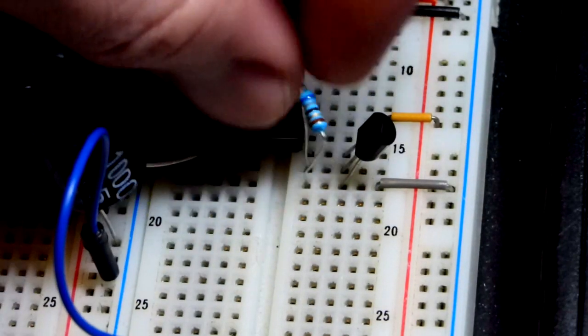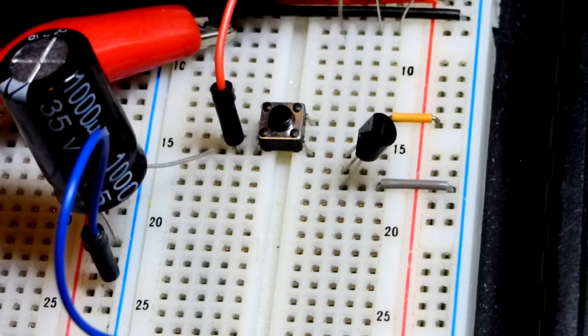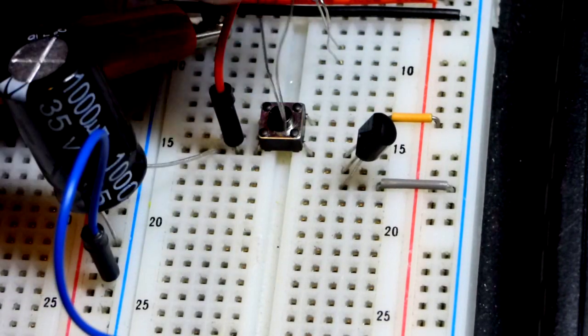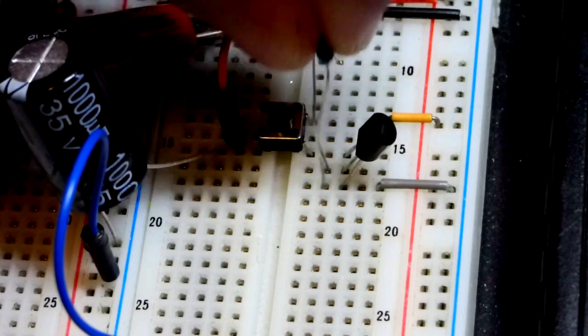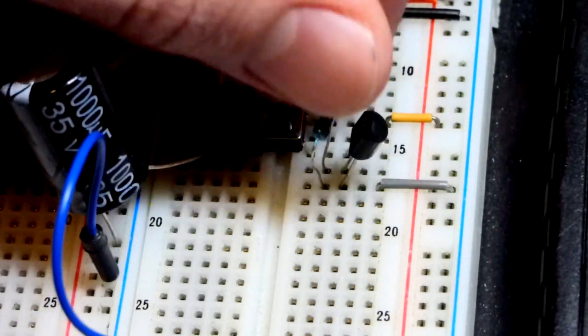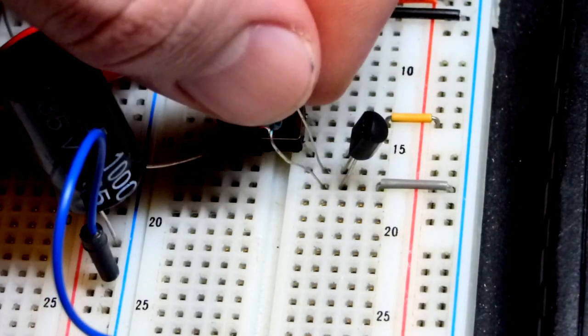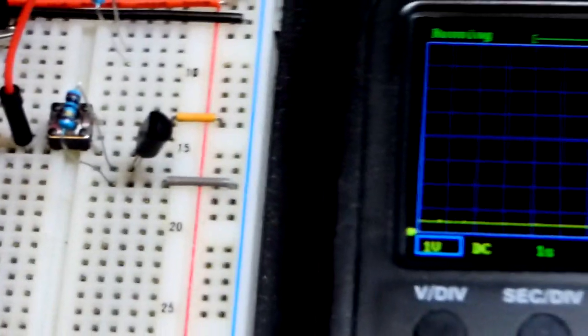So now we're going to swap the 68 ohm resistor for a 10 ohm resistor, which is going to give us a little bit less than 7 milliamps of current because it's about 1/7th of the resistance, approximately.